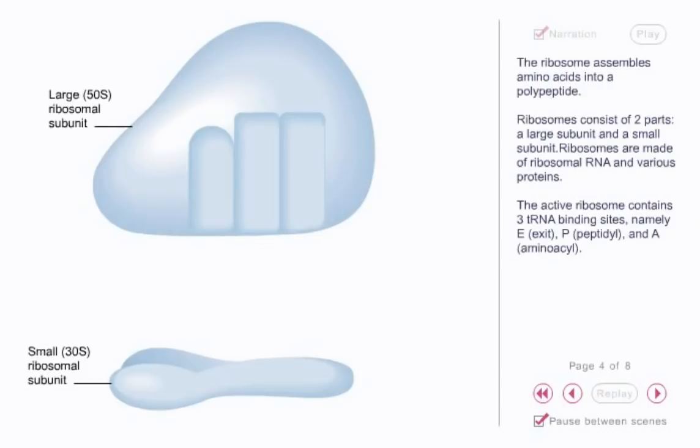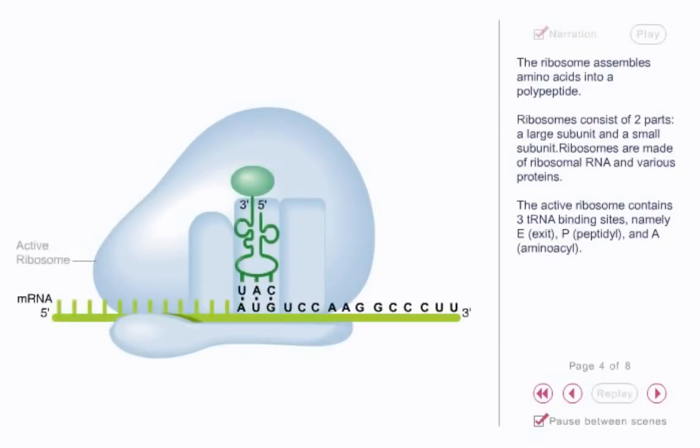The ribosome assembles amino acids into a polypeptide. Ribosomes consist of two parts: a large subunit and a small subunit. Ribosomes are made of ribosomal RNA and various proteins. The active ribosome contains three tRNA binding sites, namely E (exit), P (peptidyl), and A (aminoacyl).